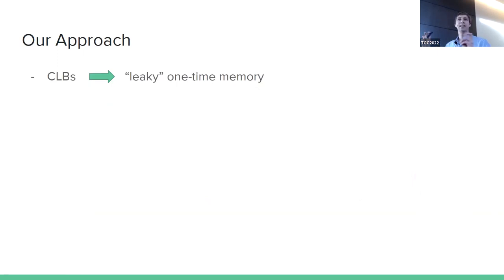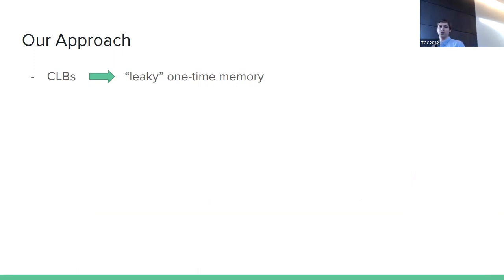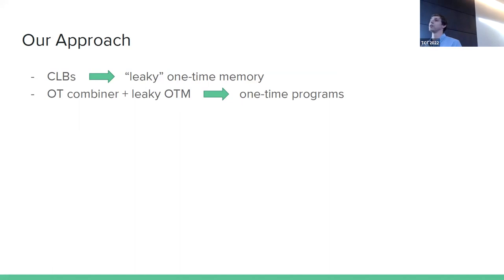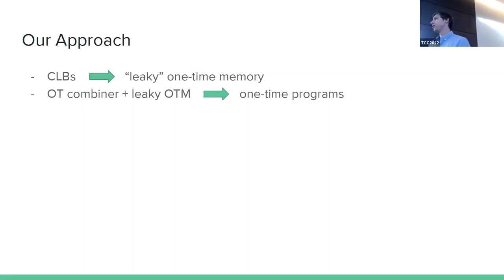Our approach: we first use counter lockboxes to build a form of leaky one-time memory, where there is a small chance the receiver can learn both values rather than exactly one. If we used garbled circuits directly, learning both wire labels completely collapses security. So we then apply OT combiner techniques: combining many bad leaky OTs into one good OT, giving us the same one-time program construction as GKR with a garbled circuit. The downside is this requires lockboxes equal to the security parameter per input bit — too many.